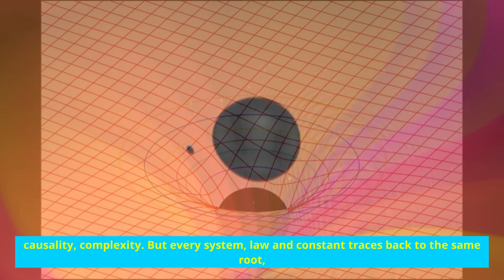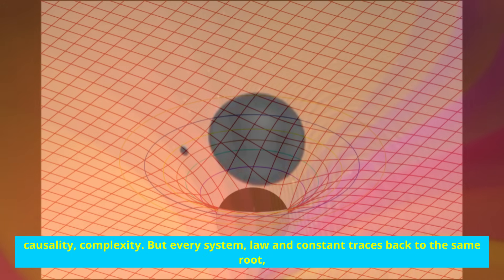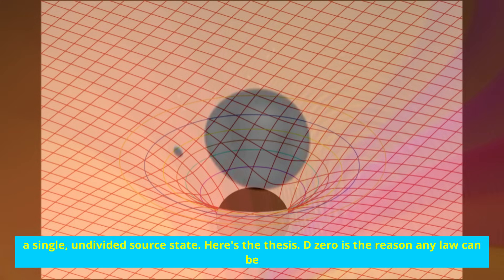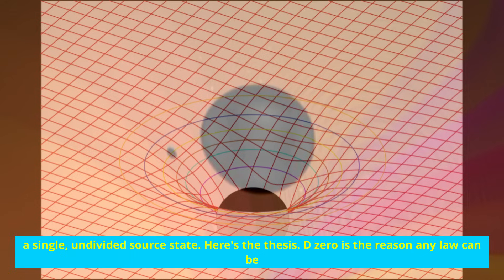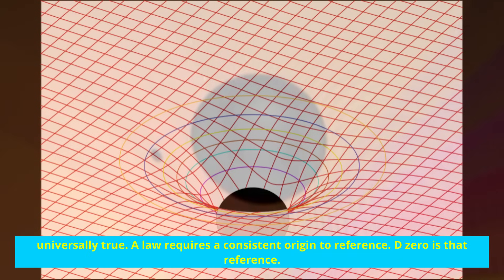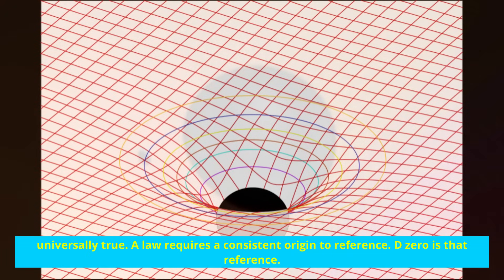But every system, law, and constant traces back to the same root, a single, undivided source state. Here's the thesis: D zero is the reason any law can be universally true. A law requires a consistent origin to reference. D zero is that reference.